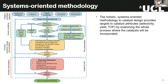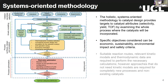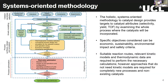To summarize, the holistic or system-oriented methodology to catalyst design provides catalyst attributes in terms of selectivity or activity by examining the effect of the catalyst on the whole process. We can have specific objectives such as economic objectives, sustainability, environmental impacts, etc. For this methodology to work, we need suitable reaction routes, relevant kinetic models, and thermodynamic data. However, as I explained, there are workarounds when we don't have kinetic models.